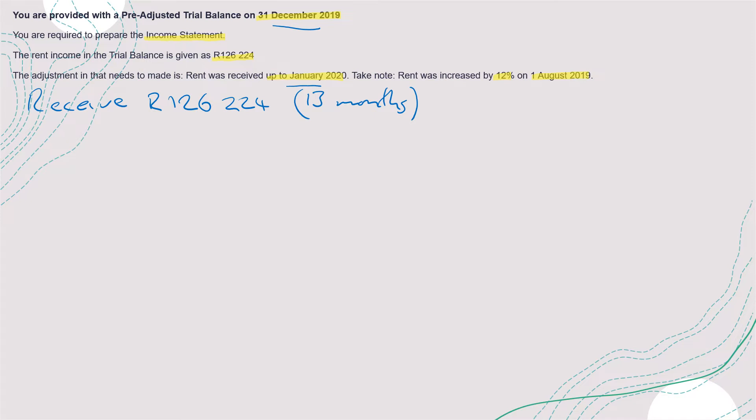If rent did not increase by 12%, we would simply divide 126,000 by 13 months to get the monthly rental income. But in this instance, because there was an increase, we cannot do that. So we need to work out how much was the rent after the increase.